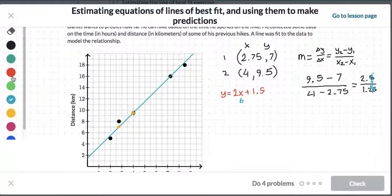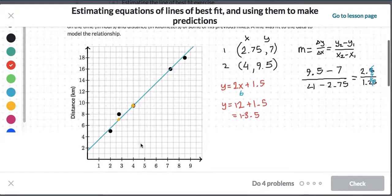y equals 6 times 2 is 12, plus 1.5 equals 13.5. So we're saying the distance here, therefore, is around about 13.5 kilometers.